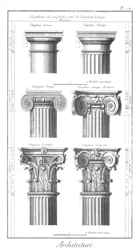Bay window: window of one or more stories projecting from the face of a building. Canted: with a straight front and angled sides. Bow window / Aureole: rests on corbels or brackets and starts above ground level; also the bay window at the dais end of a medieval great hall.